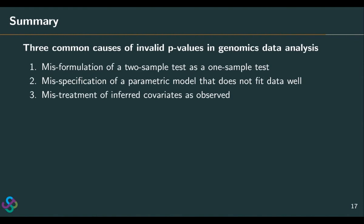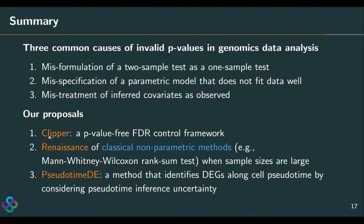To summarize, I talked about three common causes of invalid p-values in genomics data analysis: first, the misformulation of a two-sample test as a one-sample test; second, the misspecification of a parametric model that does not fit data well; third, the mistreatment of inferred covariates as observed. Our proposals are: we propose Clipper, a framework to achieve p-value-free FDR control; we echo the importance of classical nonparametric methods as a baseline — a Renaissance, I would call it — when sample sizes are large; and for the third cause, we propose pseudotime DE, which identifies differentially expressed genes along cell pseudotime by treating pseudotime as an inferred covariate and capturing its uncertainty.